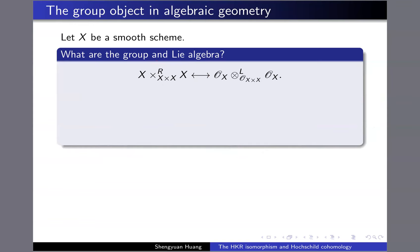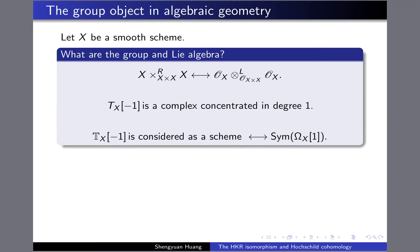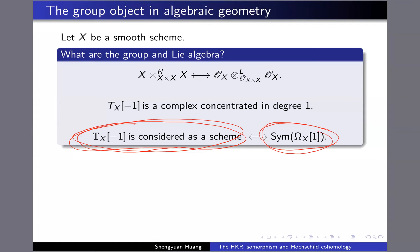The corresponding Lie algebra is the shifted tangent bundle — again a chain complex, but you put the tangent bundle in degree one rather than degree zero. There are two ways to think about a vector bundle over X: one is as a locally free sheaf over X; the other is as a scheme over X such that each fiber is a vector space. When I consider the shifted tangent space as a scheme over X, in terms of the structure complex you take the dual of the vector bundle and take the symmetric algebra on that.